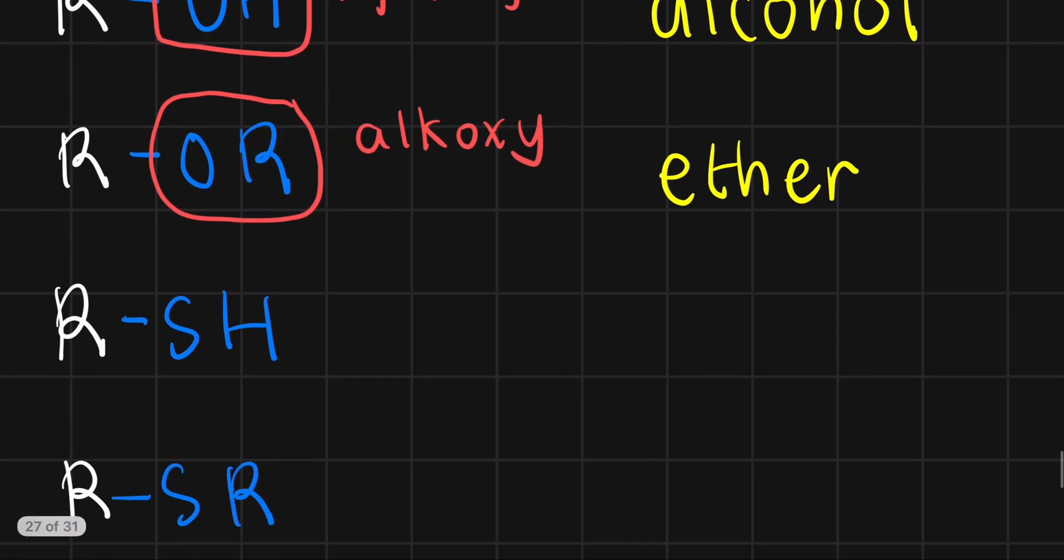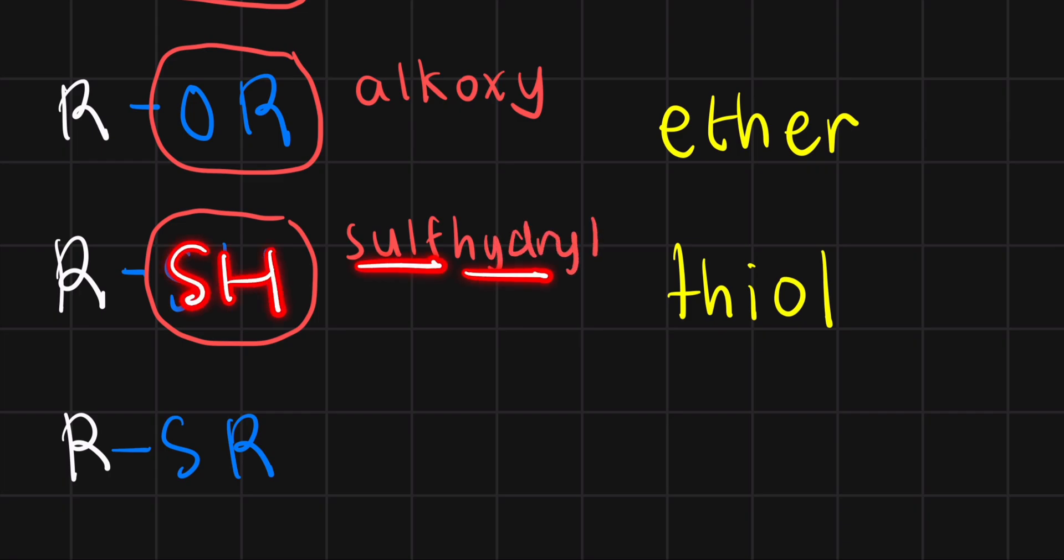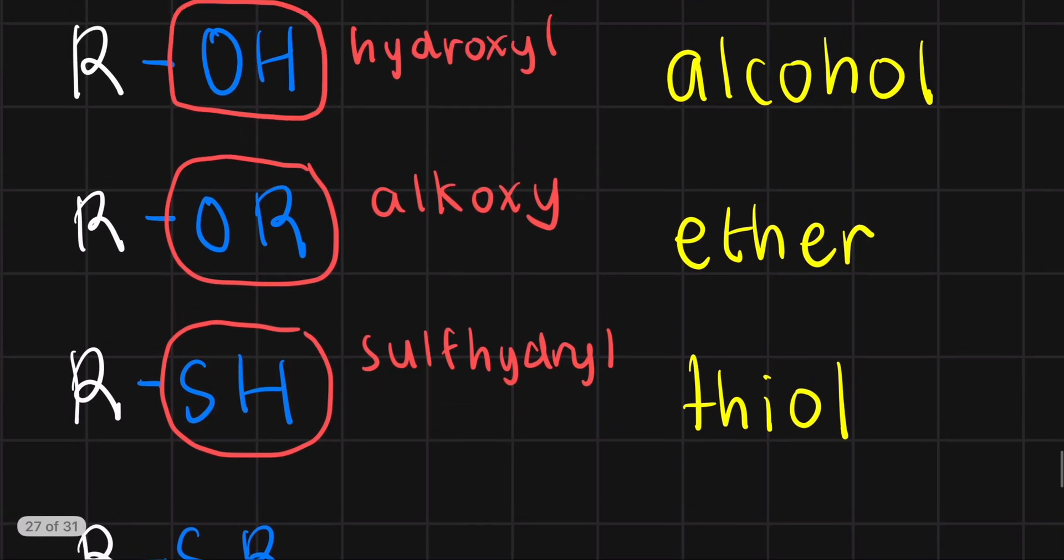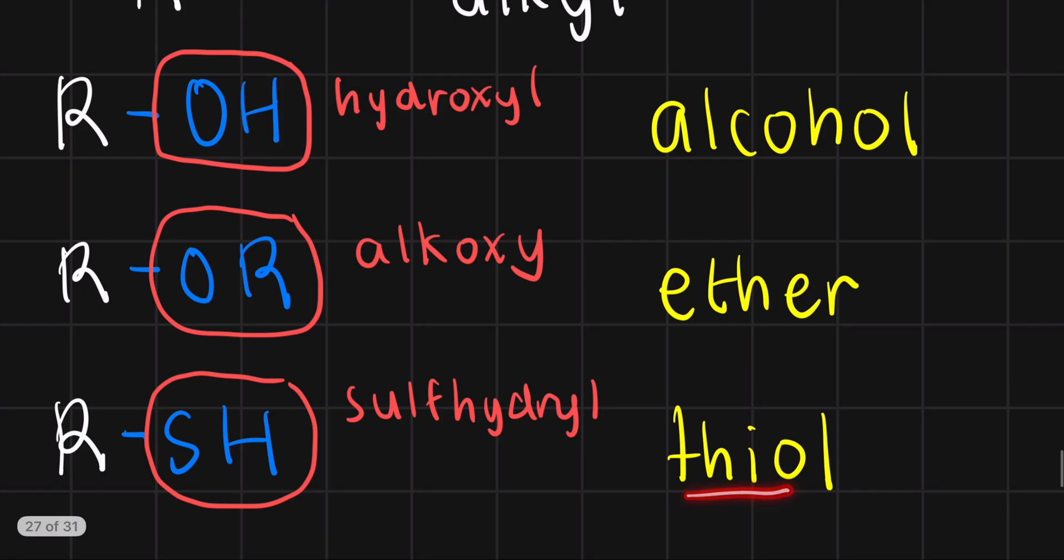Now, let's have an SH group. And our SH compounds are called thiols. And the SH is called the sulfhydryl group, which makes sense because we have sulfur and hydrogen. If you notice, the AL is kind of a nod to the AL of alcohol, as if we're saying that thiols are like the sulfur analogs of alcohols.